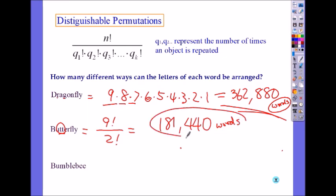These are called distinguishable permutations. The order still matters but there's some that will not change the outcome.